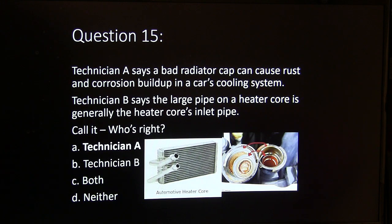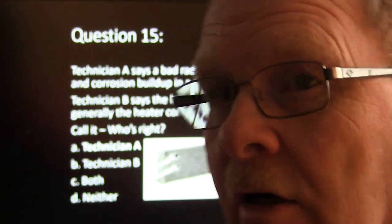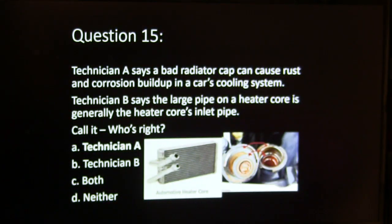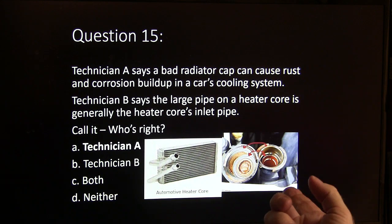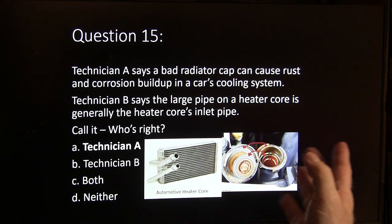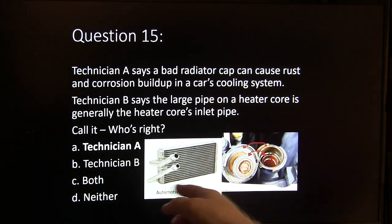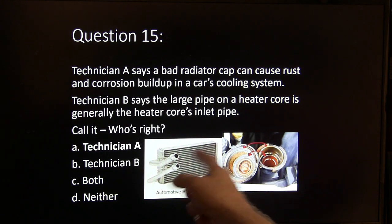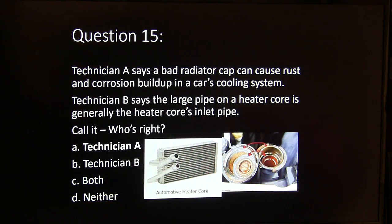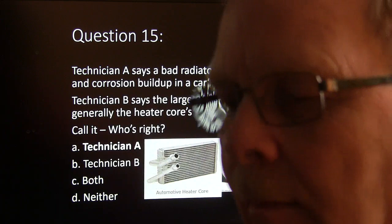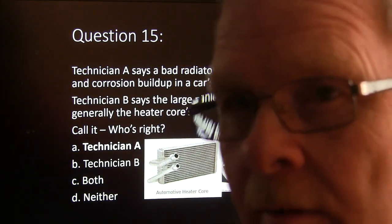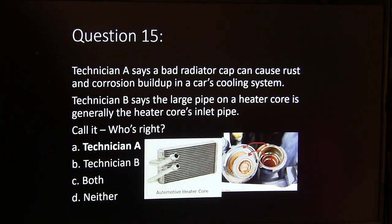Technician A says a bad radiator cap can cause rust and corrosion buildup — that's correct, because if air can just come and go you'll get rust and corrosion. Technician B says the large pipe on the heater core is the heater core's inlet — that's wrong. The large pipe is the outlet. You want the big one to be the outlet so there's no pressure on that heater core; a smaller outlet can cause pressure buildup. You can actually bust a heater core by hooking those hoses up wrong.